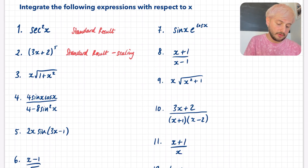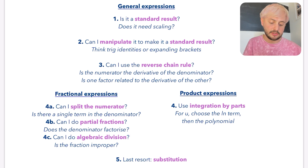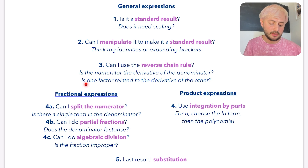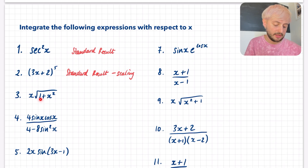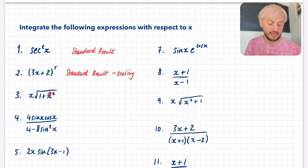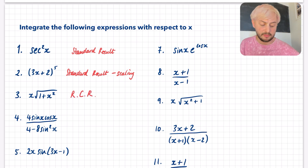Number 3: I've got x and I've got (1 + x²). Going through the checklist, it's definitely not a standard result, and I don't think I can manipulate it. So I ask myself: can I use the reverse chain rule? Because it's not a fraction, the question is whether one factor is related to the derivative of the other. The derivative of the inside part — (1 + x²) — is 2x, and 2x and x are related by scaling. So this one is going to be a reverse chain rule question, with some scaling needed.